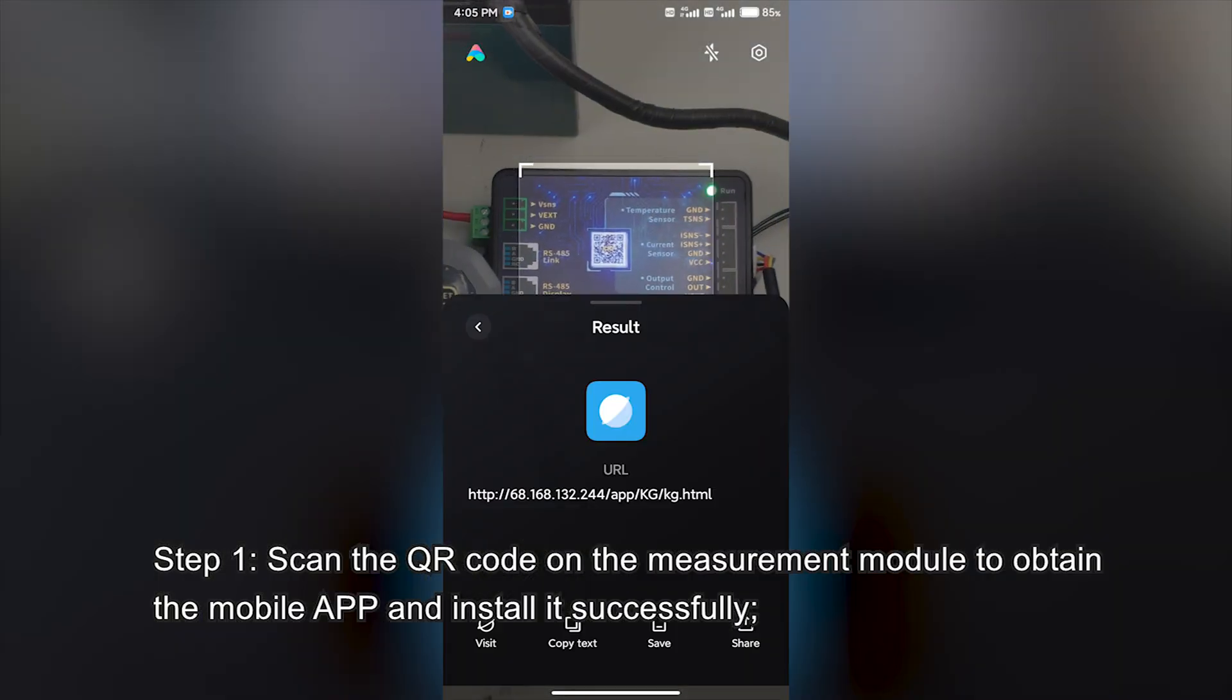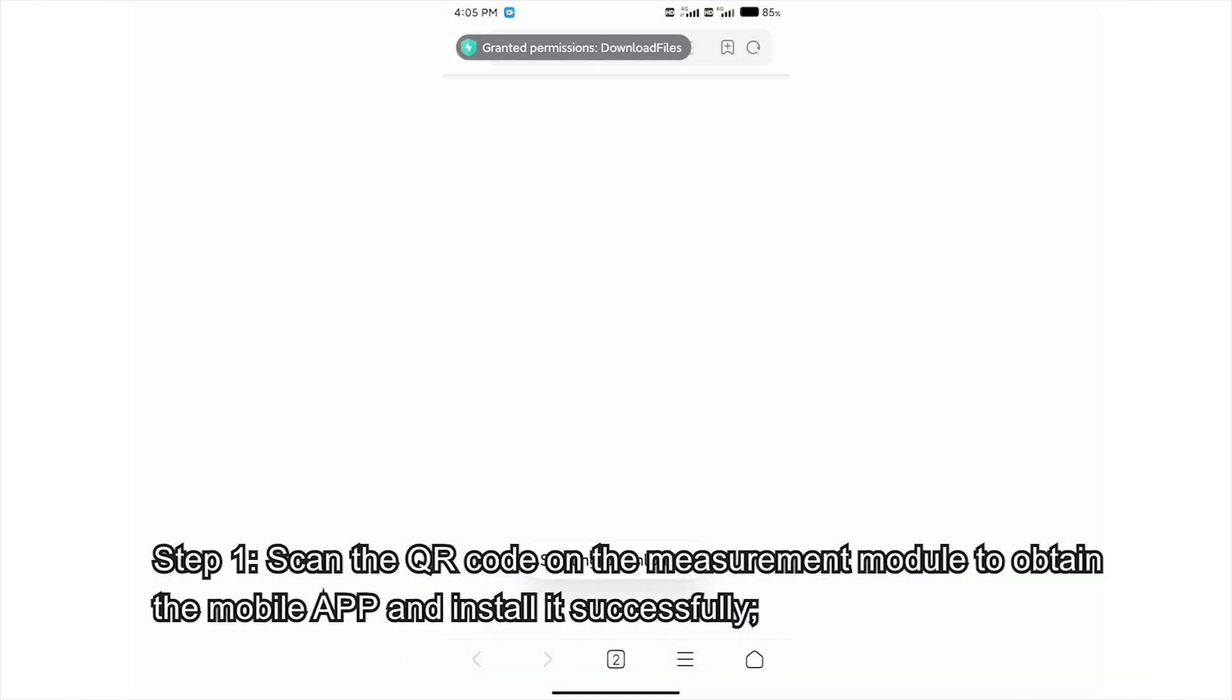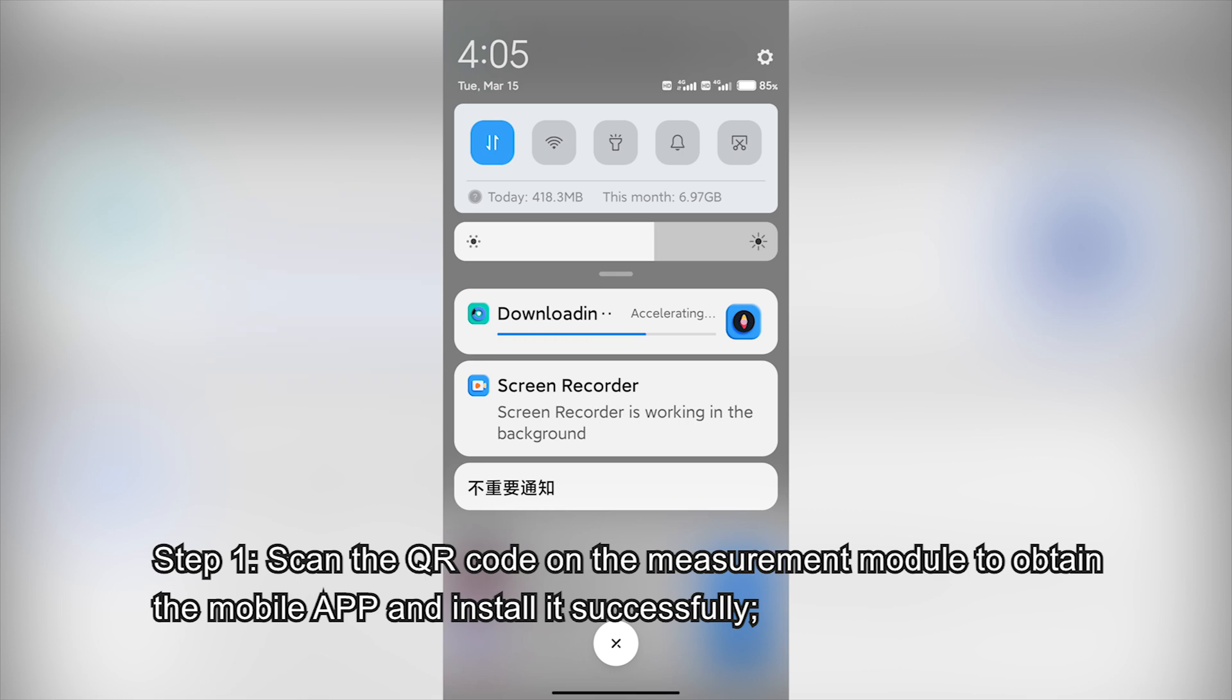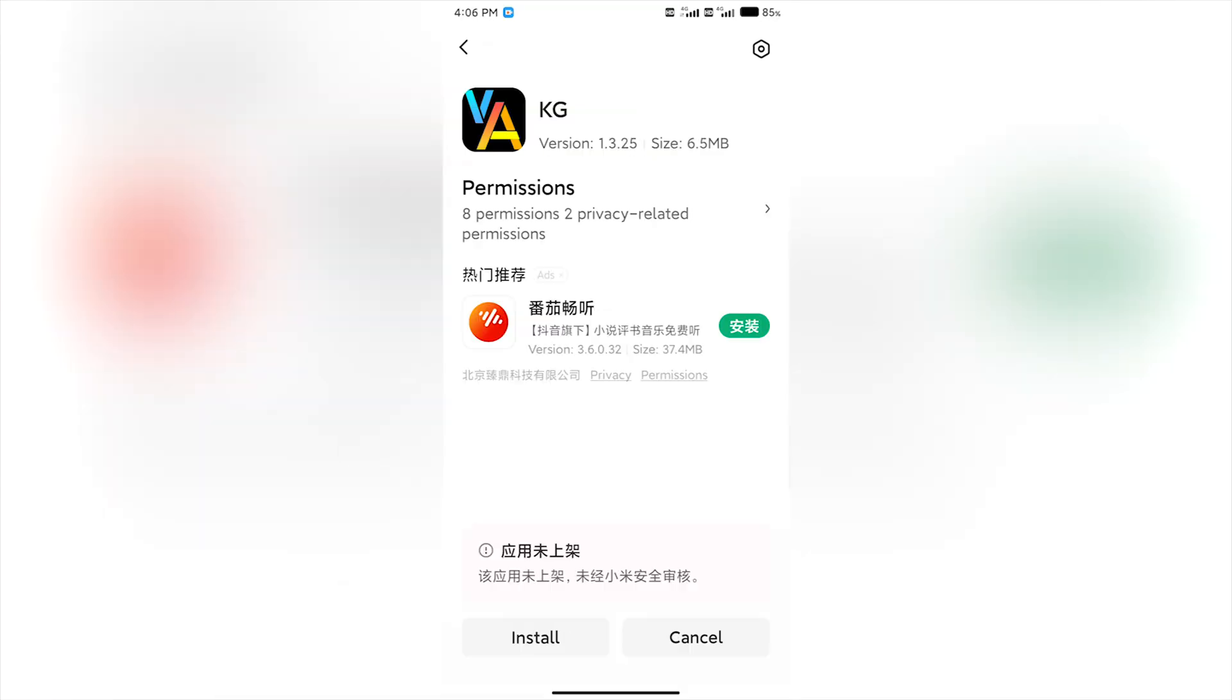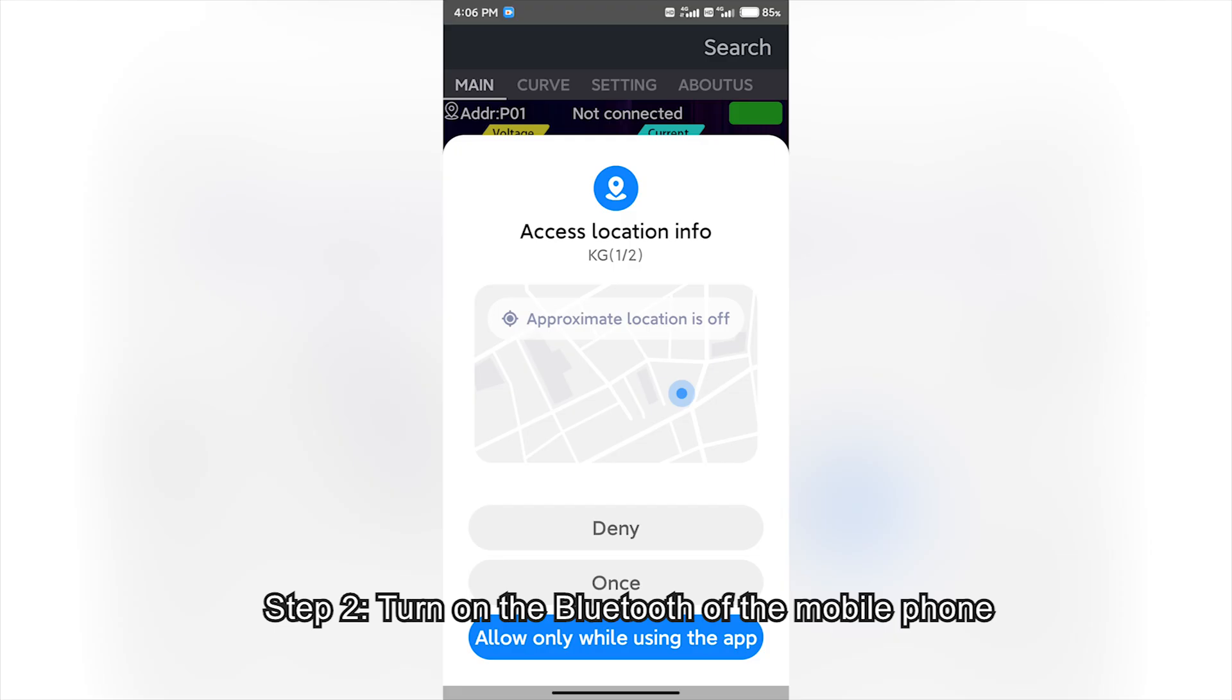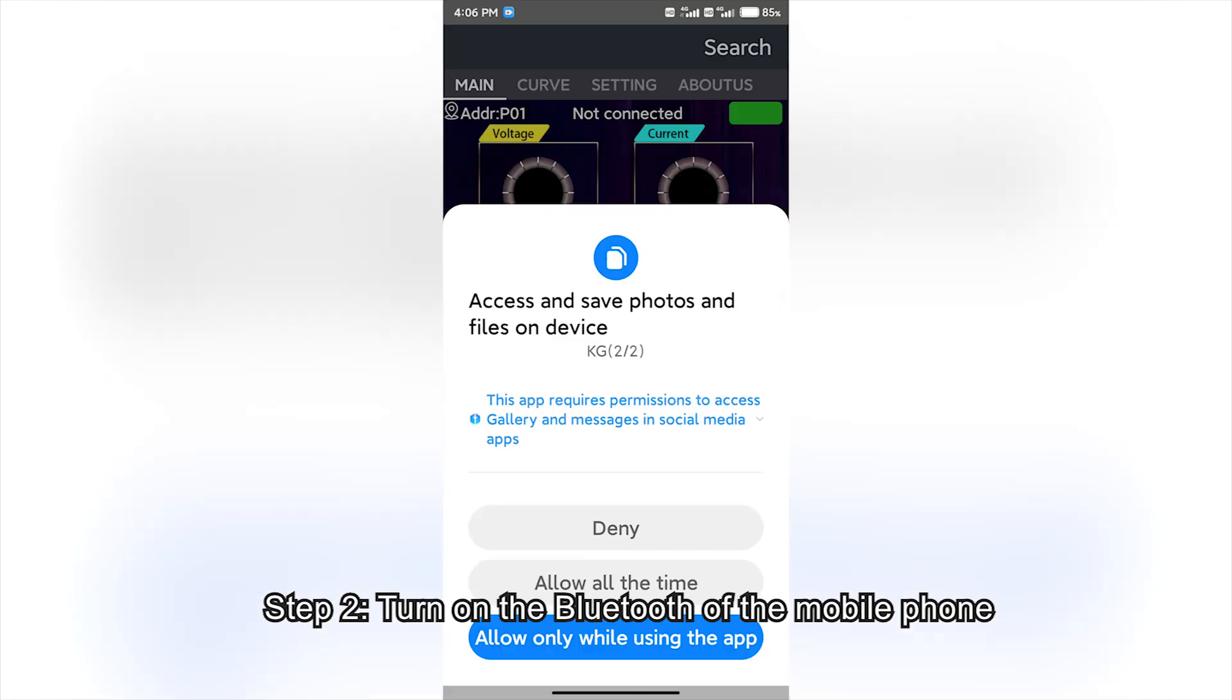Step 1. Scan the QR code on the measurement module to obtain the mobile app and install it successfully. Step 2. Turn on the Bluetooth of the mobile phone.